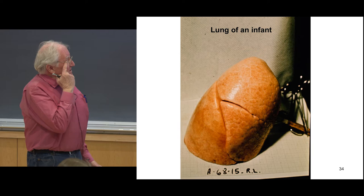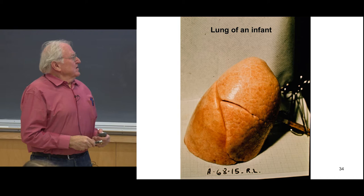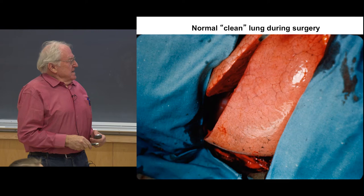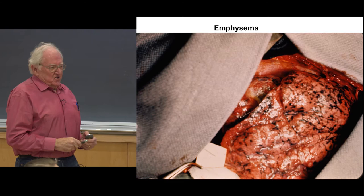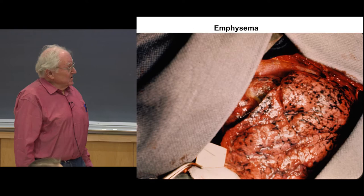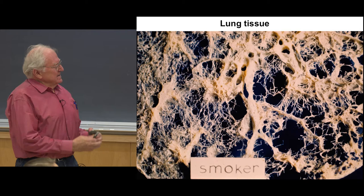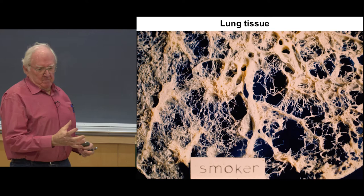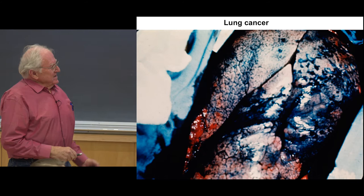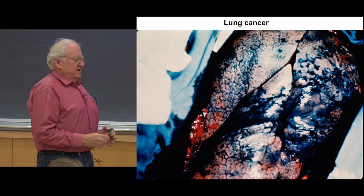Let me show you what lung cancer is. This is a normal-looking lung of an infant. Here's a normal, clean lung during surgery. Emphysema, COPD — really damage the lung, not cancer, but very serious disease. Normal lung tissue versus lung tissue of a smoker — you can see the tissue is literally dissolved, much like putting acetone in a styrofoam cup. Lung cancer during surgery illustrates that you can't operate — it's everywhere in the lung of a smoker. These are a pair of lungs where all of these lumpy things are tumor.